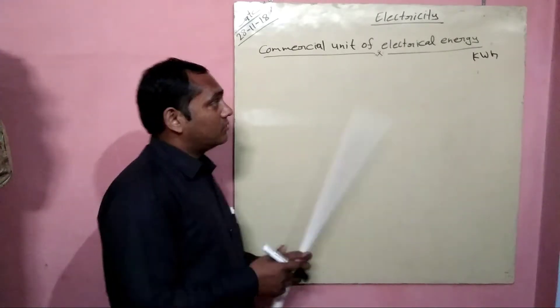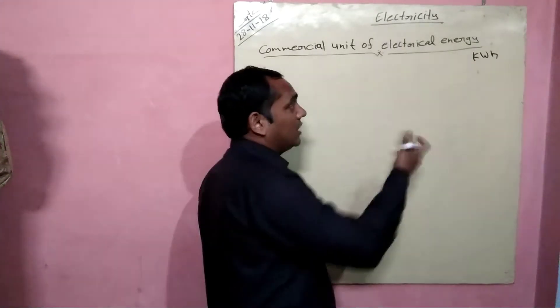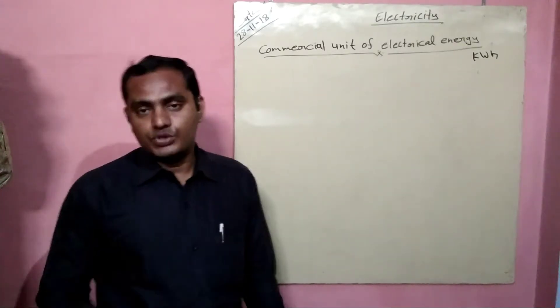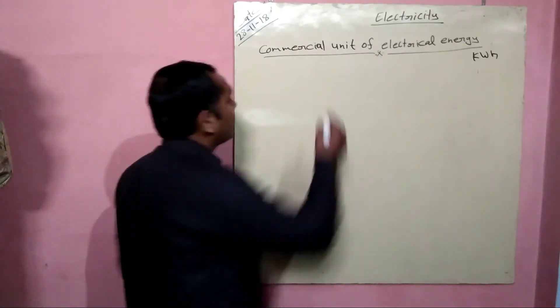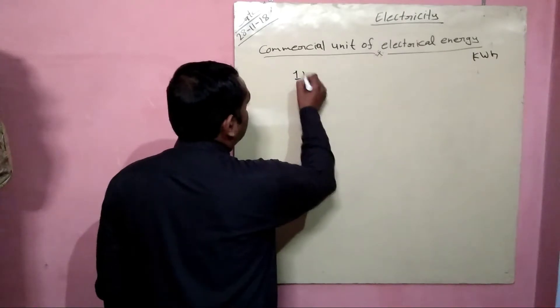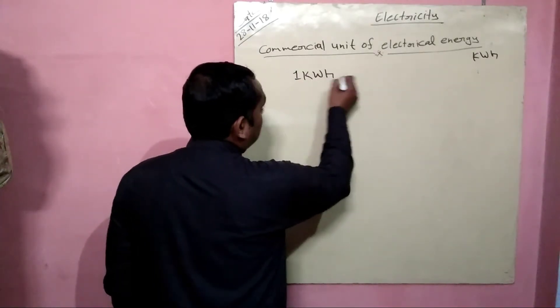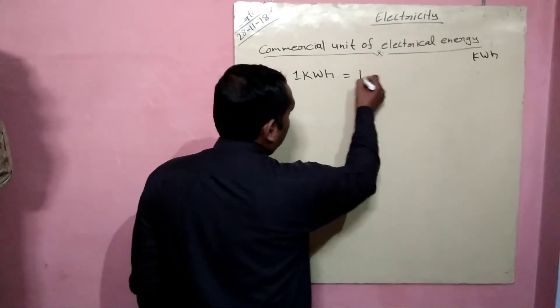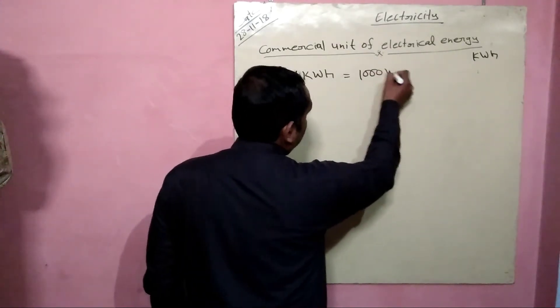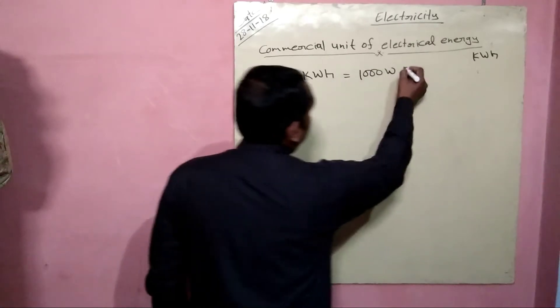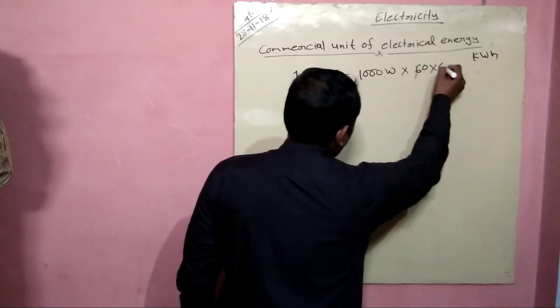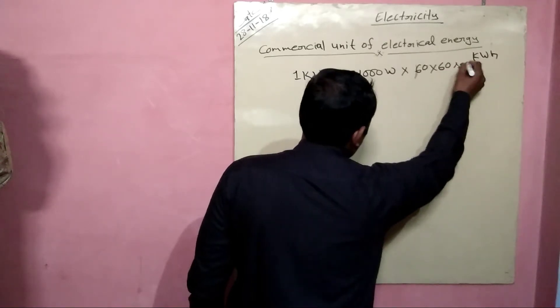So we can calculate how much Joule one kilowatt hour is. Let us see: one kilowatt hour - we know that in one kilowatt there are thousand watts, and in one hour there are 60 into 60 seconds.